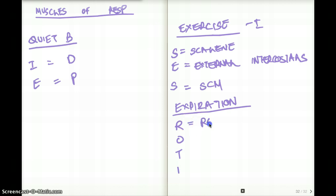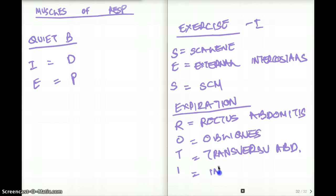R is for rectus abdominis. O is for obliques. T is for transversus abdominis. And I is for internal intercostals.